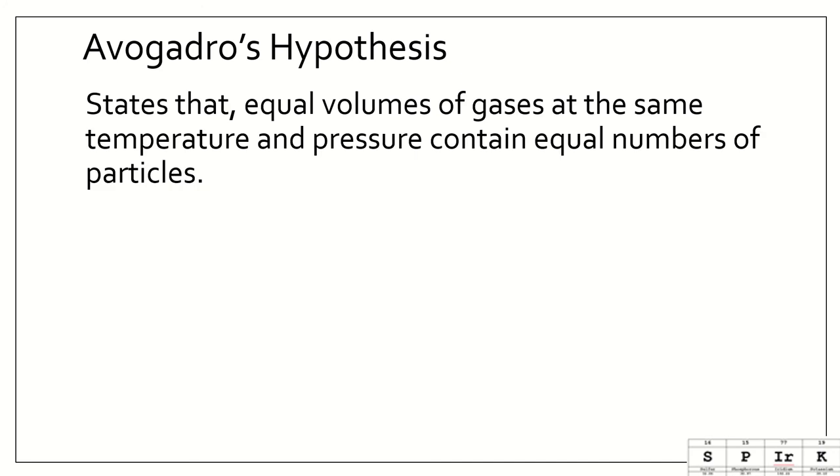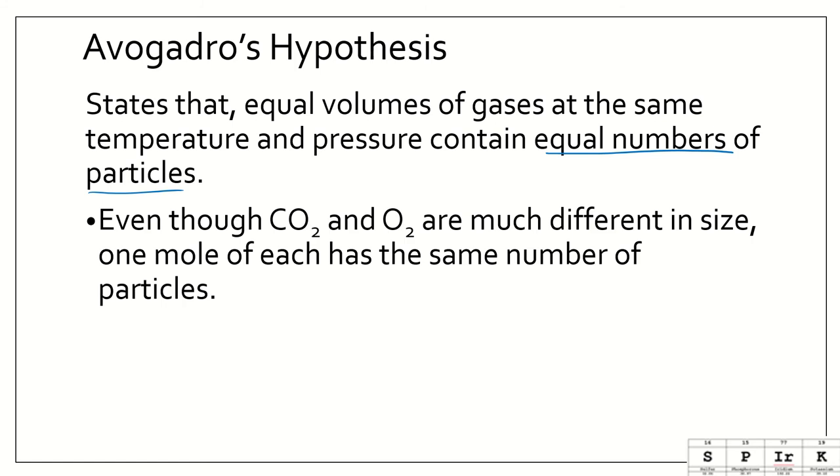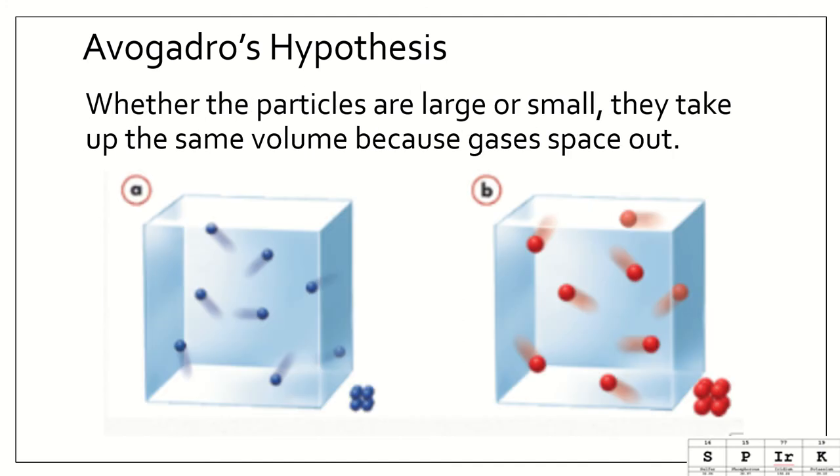Avogadro's hypothesis states that equal volumes of gases at the same temperature and pressure contain equal numbers of particles. Even though carbon dioxide and oxygen are much different in size, one mole of each has the same number of particles. Whether the particles are large or small, they take up the same volume because gases space out. The mole of O2 takes up the same volume as a mole of CO2, as long as they are at the same temperature and pressure.